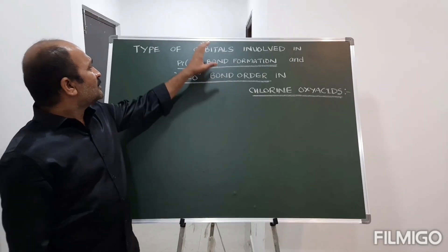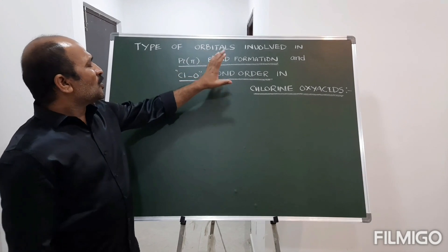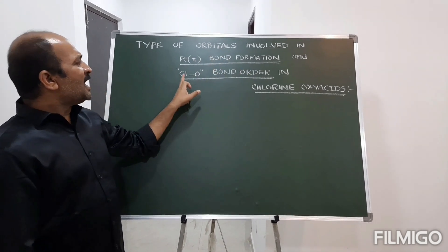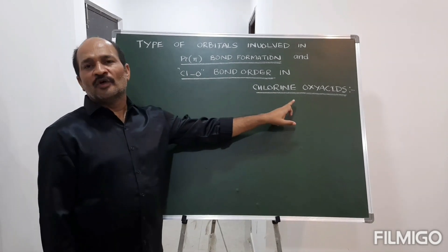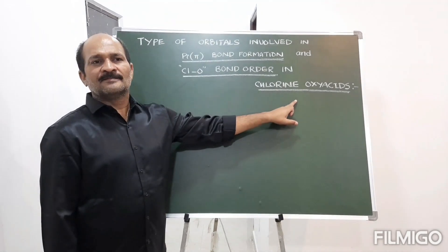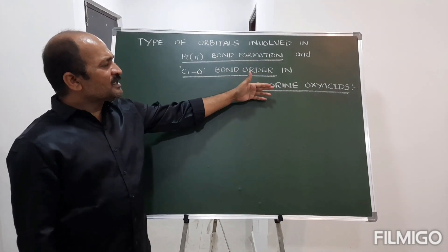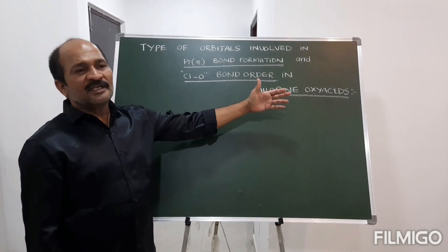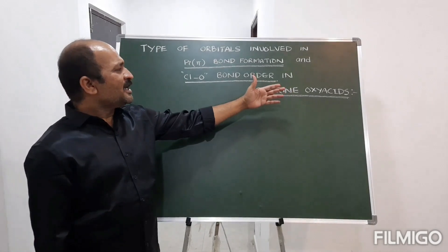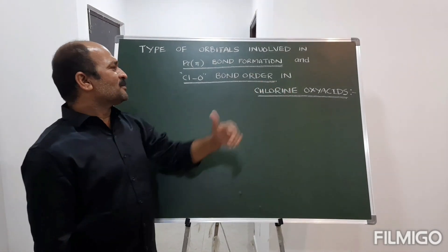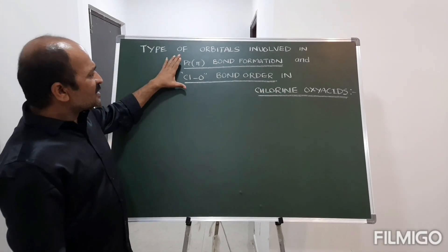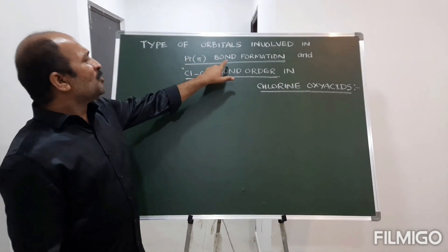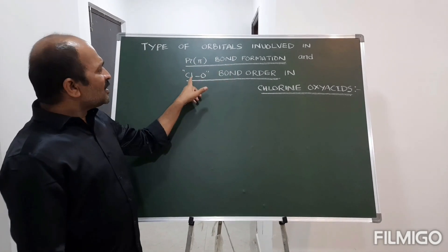Today we are going to concentrate on pi bond formation and Cl-O bond order in chlorine oxy acids. This topic is very important for competitive examinations, especially NEET, JEE Mains, and JEE Advanced. We will cover how the chlorine oxy acids form the pi bond and what is the bond order.